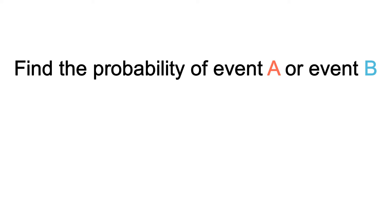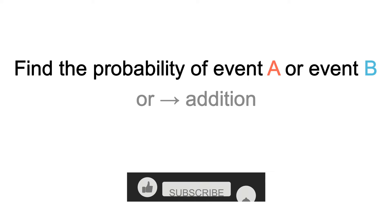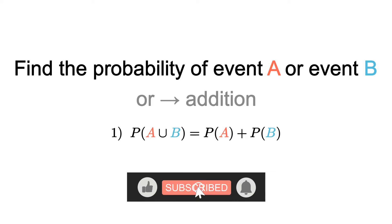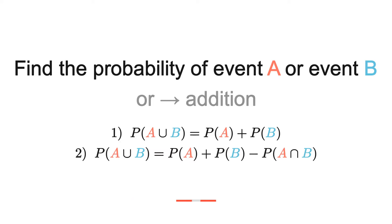Let's say we had to find the probability of event A or event B. In general, when we see the keyword 'or' in mathematics, this indicates that we're going to use addition. And in the context of probability, whenever you see the keyword 'or,' this means we're going to be using our addition rules. There are actually two addition rules, and the rule we use depends on the types of events we're dealing with.